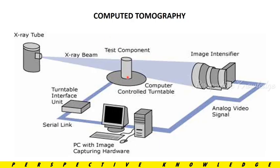If there are any problems or defects, we can easily identify them using the Radiography Inspection method. The system uses X-ray tubes, an image intensifier to capture and record the image to a computer, with a turntable interface unit to adjust the object and scan it. This is Radiography Inspection — if you like, please share and subscribe. Thank you.